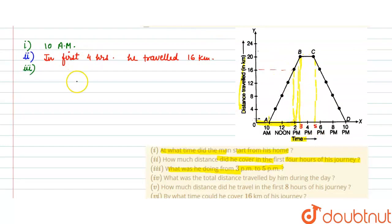Clear, in between he was taking rest, no traveling. So you can write, he was taking rest because there was no displacement during that duration between 3 PM to 5 PM.